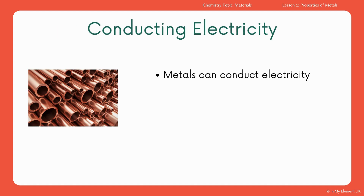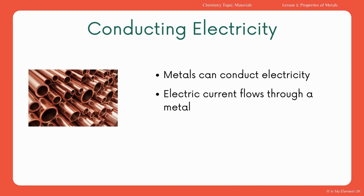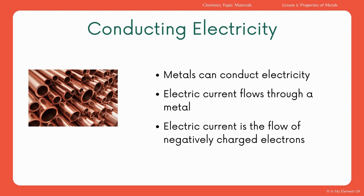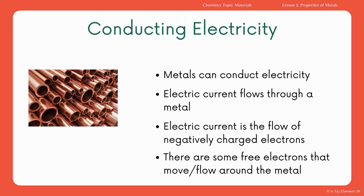Let's look at a couple of these properties in detail. The first is that metals can conduct electricity because electric current flows easily through the metal. Electric current is the flow of negatively charged electrons. Because there are free electrons that can move around the metal, they can conduct electricity from one end to another, which is why metals are used in wires.